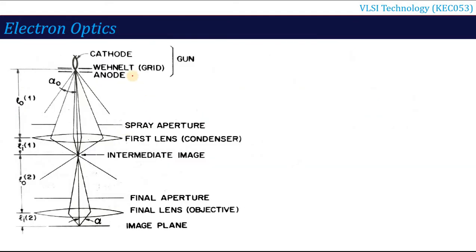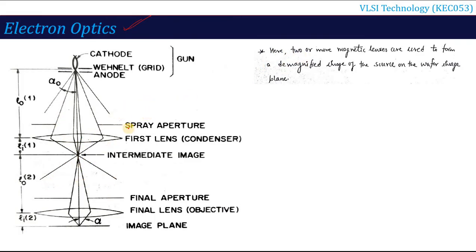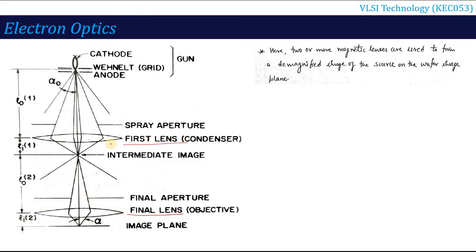What is the mechanism involved in electron lithography, or what we can call electron optics? The process is shown in a diagram. It uses two magnetic lenses. One lens is here and this is the second lens — this is the final lens and this is the first lens. This first lens is used for magnification and the second lens is used for demagnification. An image is generated and sent down to the wafer plane.